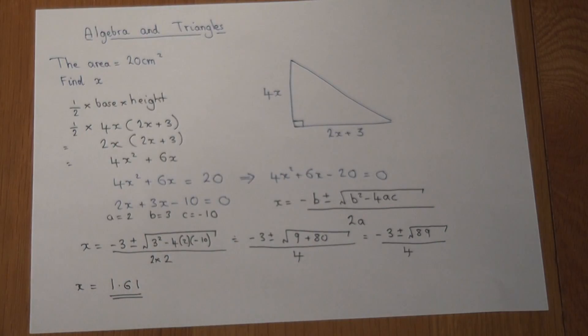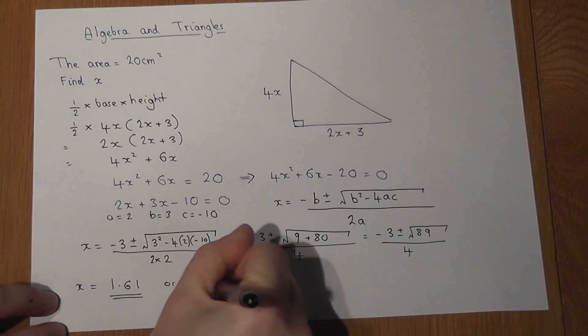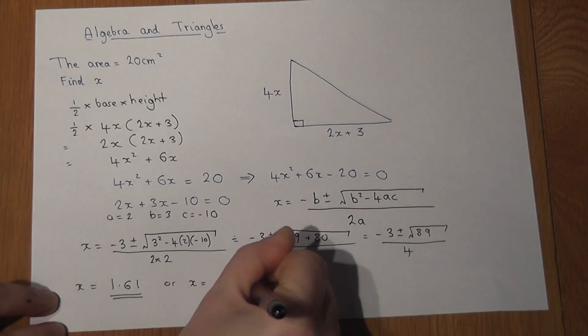Or if I do the minus one, so minus 3 take root 89, we end up with x equals minus 3.11.